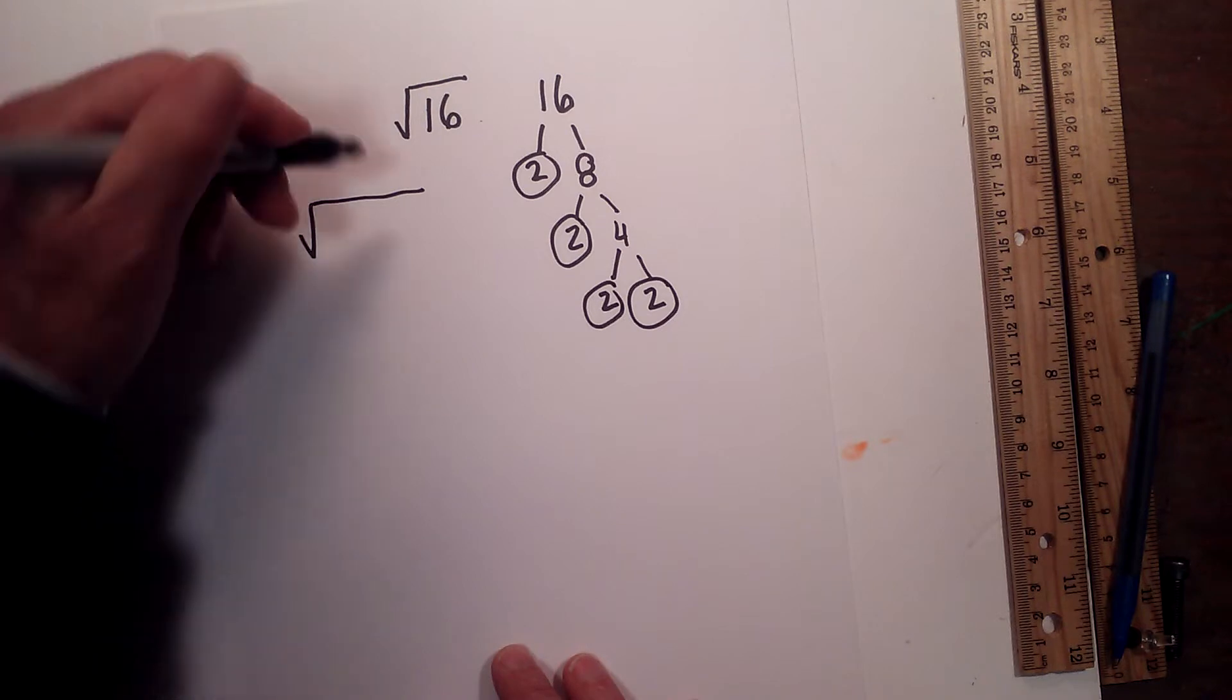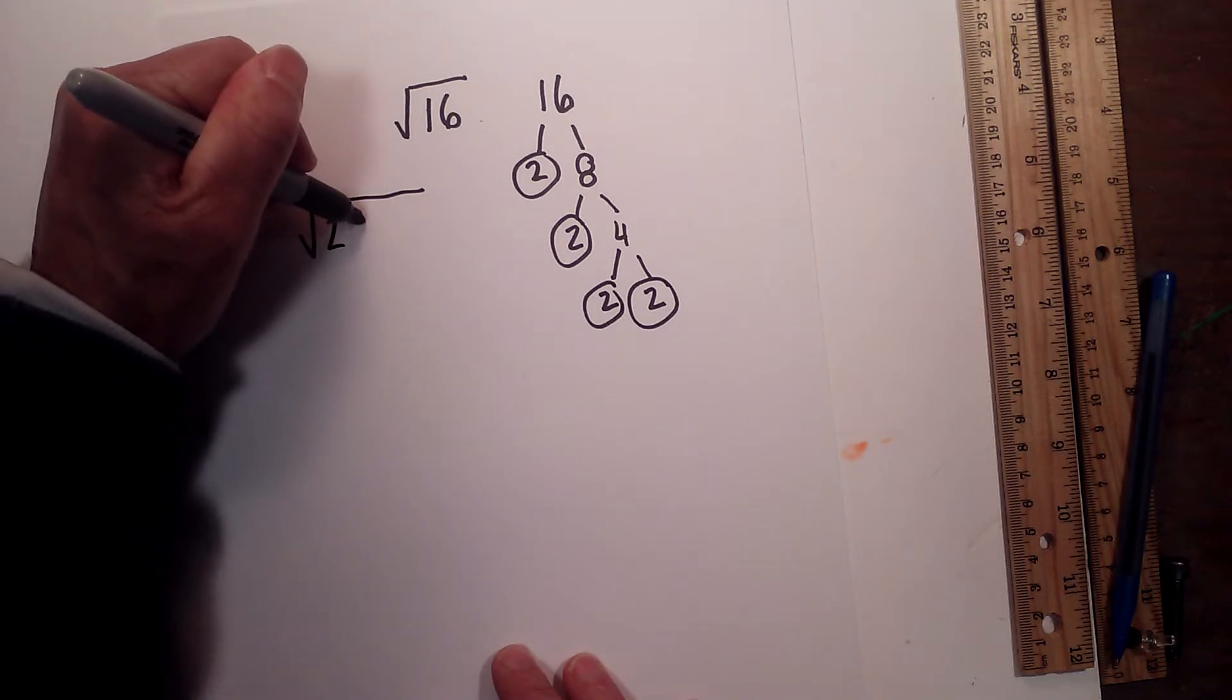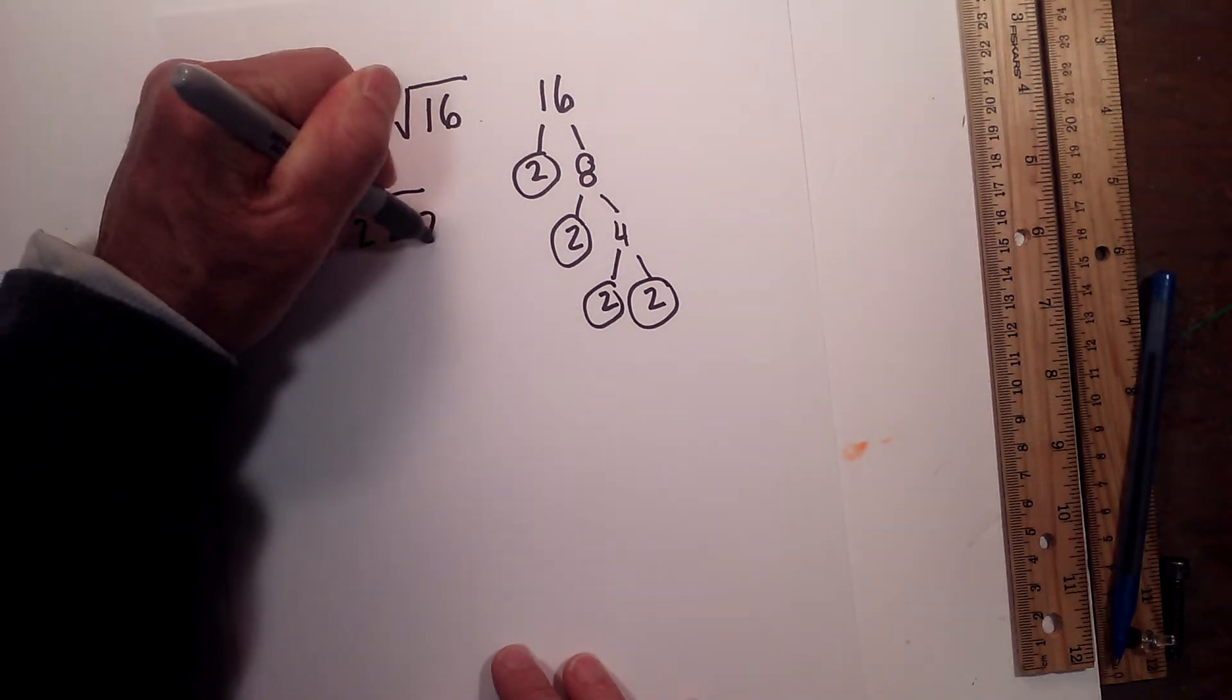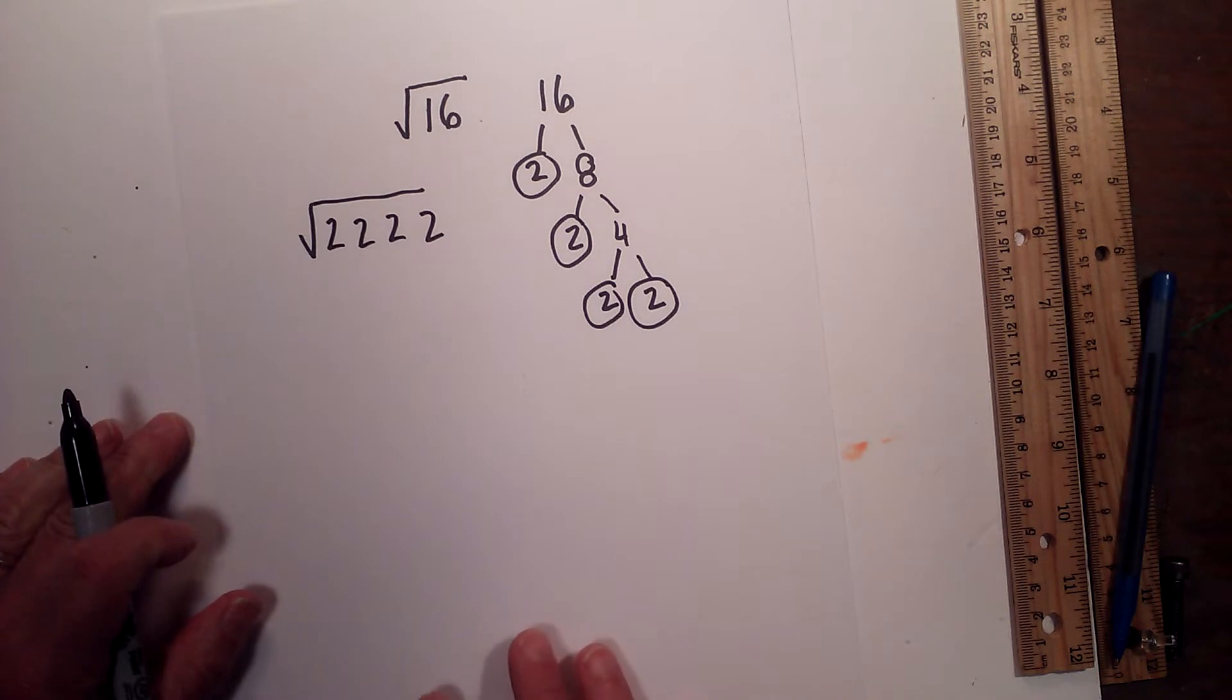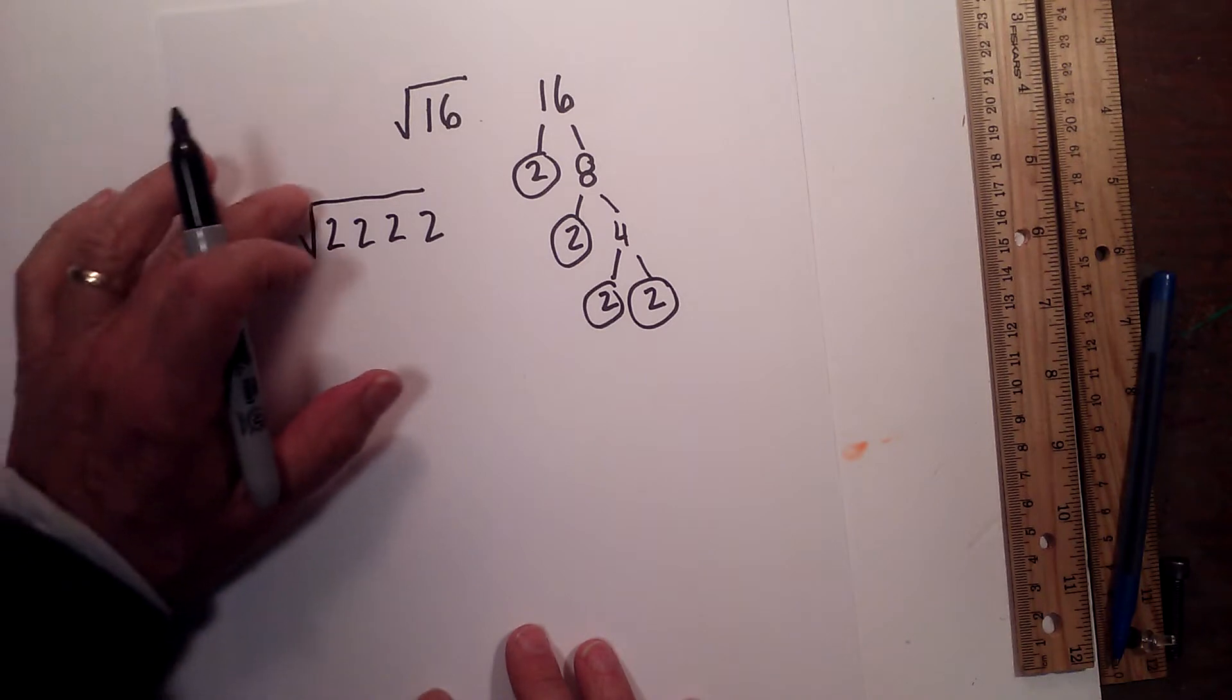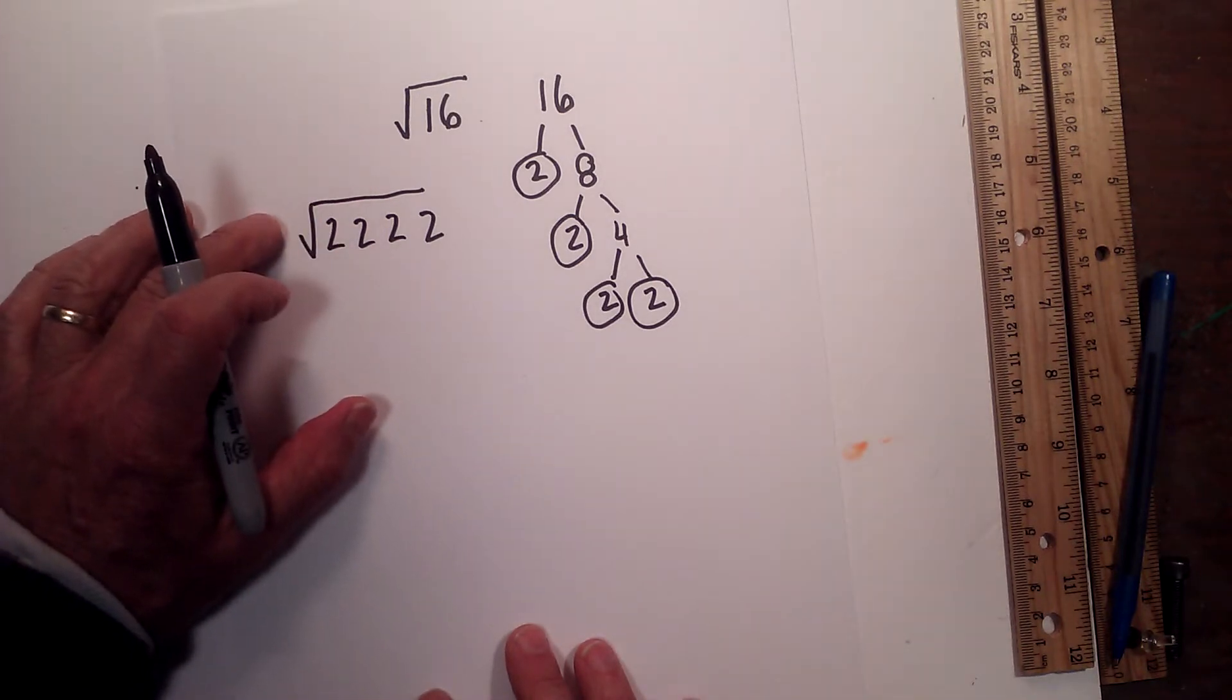So now I'm going to rewrite the radical symbol, square root symbol, and I'm going to write all the prime numbers under it. Next, the rule of thumb, since it's a square root, which is the number by itself times itself 2 times, in order to get out from under the square root symbol, they must be in pairs.